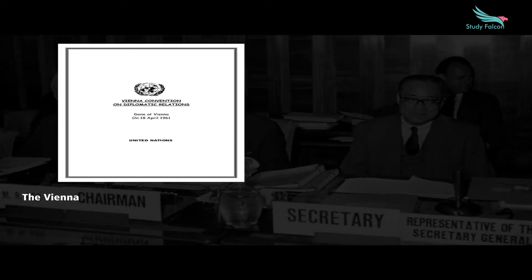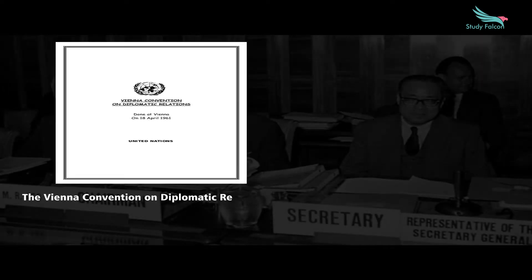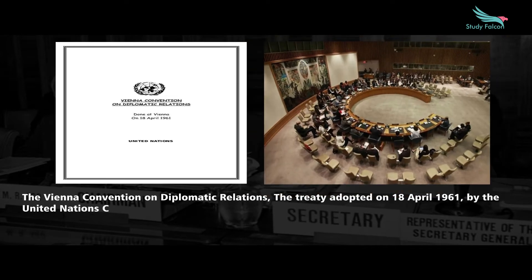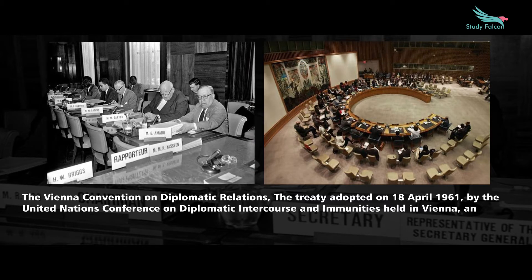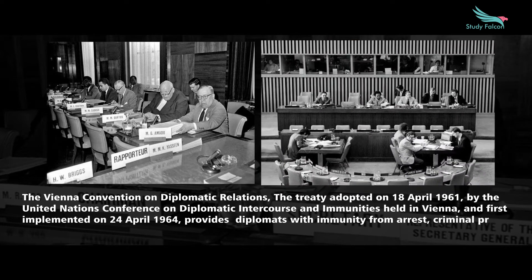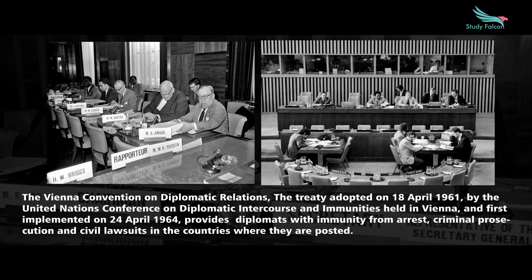The Vienna Convention on Diplomatic Relations is the treaty adopted on the 18th of April 1961 by the United Nations Conference on Diplomatic Intercourse and Immunities, held in Vienna, and first implemented on the 24th of April 1964. It provides diplomats with immunity from arrest, criminal prosecution, and civil lawsuits in the countries where they are posted.